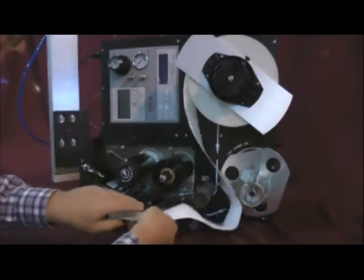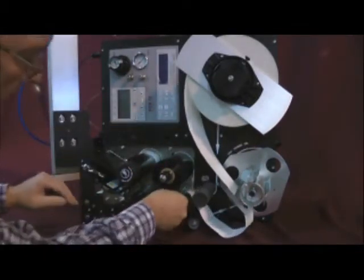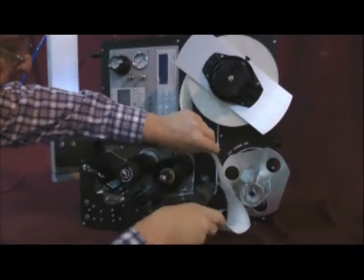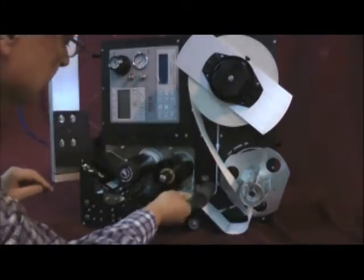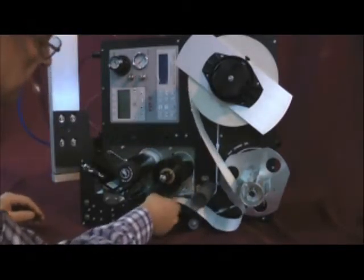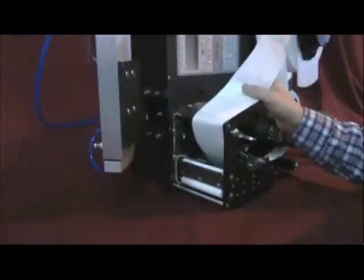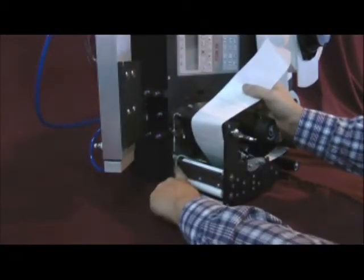Thread the label under the foam roller and through the label guides, bringing the labels under the silver ribbon sensor bar and out the front of the print engine assembly. Continue to follow the pre-printed label path.